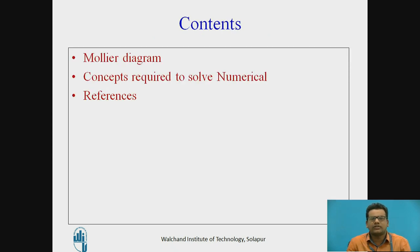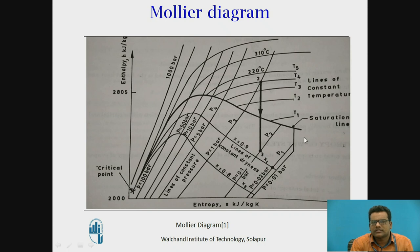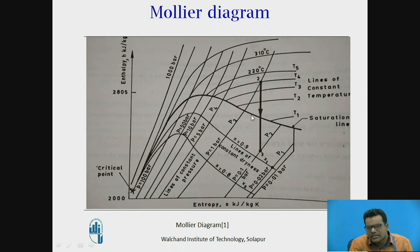The contents we are going to discuss today include the Mollier diagram and the concepts required to solve numericals. The Mollier diagram is the representation of the condition of steam on an enthalpy versus entropy diagram. This diagram is divided into two parts. There is a line called the saturated liquid line; below it is the wet mixture, and above it is the superheated region. This line is represented as the quality X equals 1, meaning the dryness fraction at any point on this line is 1.